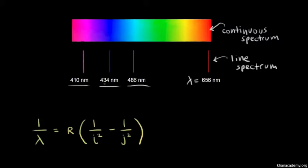We can do that by using the equation derived in the previous video — I call this the Balmer-Rydberg equation. One over lambda, where lambda is the wavelength of light emitted, is equal to R (the Rydberg constant), times one over i squared, where i refers to the lower energy level, minus one over j squared, where j refers to the higher energy level.